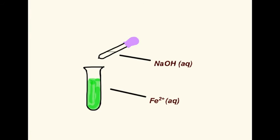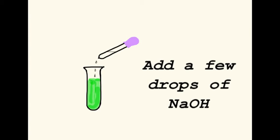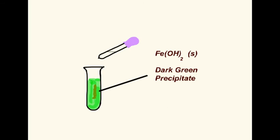When it's added to a solution containing Fe 2 plus ions, a dark green precipitate results.